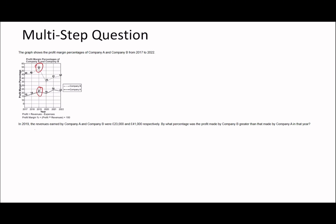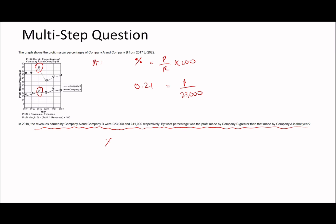For this question: in 2019 the revenues earned by company A and B were given numbers. By what percentage was the profit made by company B greater than that made by company A? For A: profit margin percentage equals profit divided by revenue times 100. In 2019 for A that's 21%, so 0.21 equals profit divided by 23,000. Calculating: 23,000 times 0.21 gives a profit of 4,830.